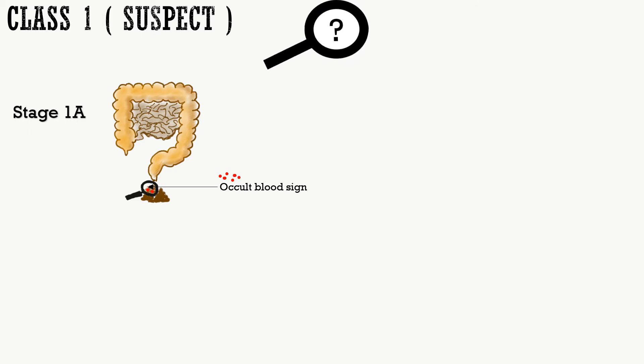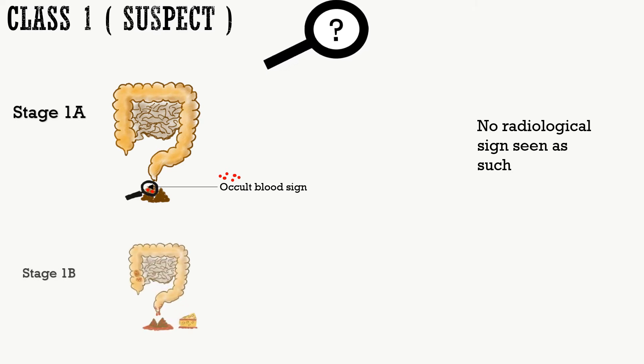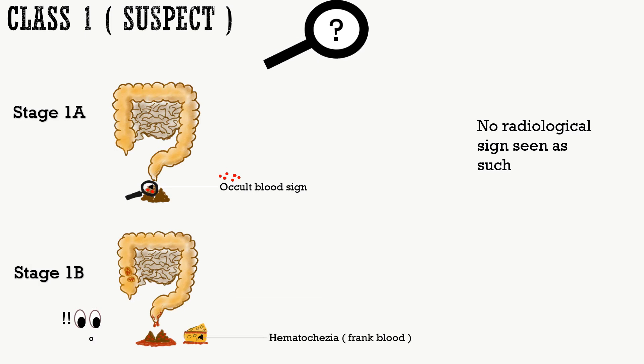As the stage seems silent, so is the radiological sign — there is no radiological sign seen in stage 1a. In stage 1b, all the features of stage 1a are present along with frank blood in the stool, also termed hematochezia. There is also no radiological sign in stage 1b.